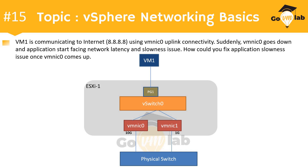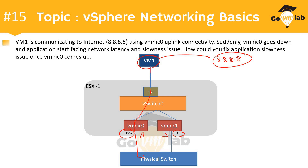Now it's time to reveal the answer. Looking at the problem statement, VMNIC0 is a 10 Gbps adapter and VMNIC1 is a 1 Gbps adapter. VMNIC0 was the active adapter and VMNIC1 the standby adapter per our teaming configuration. By default, the packet was going through the 10 Gbps adapter, which always provides much better bandwidth and throughput compared to the 1 Gbps adapter. That is why when the application was accessing the 8.8.8.8 server, there was no slowness issue.